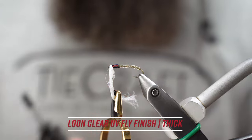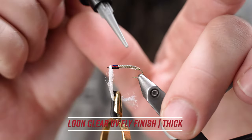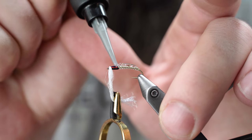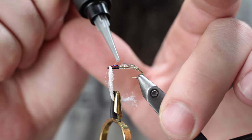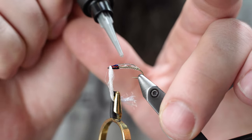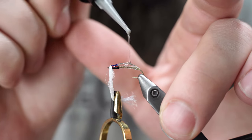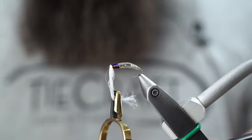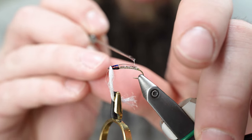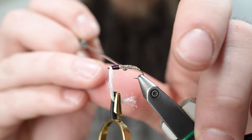I'm using some thick Loon UV glue. Just going to get it on there to start with. And we'll use our bodkin to get it covered on the entire fly here.